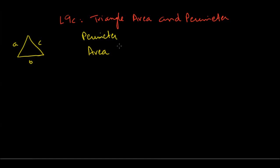Next we'll look at area and perimeter of triangles. Let's say we have a triangle with sides a, b, and c. The perimeter is easy — perimeter is just equal to the sum of the lengths of the three sides: a plus b plus c. Area is slightly trickier.